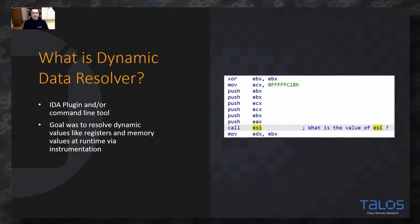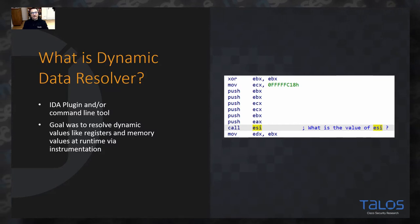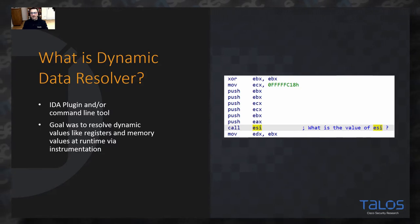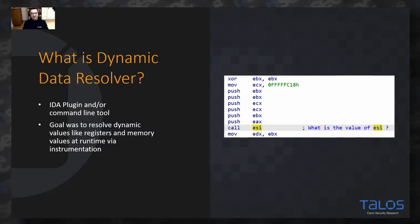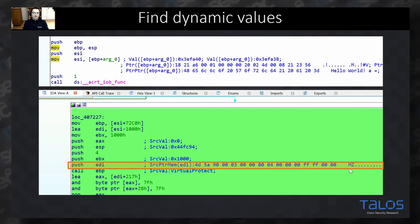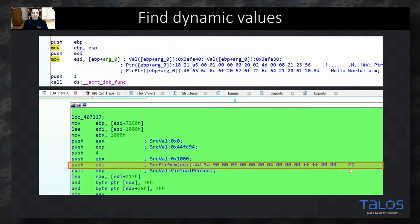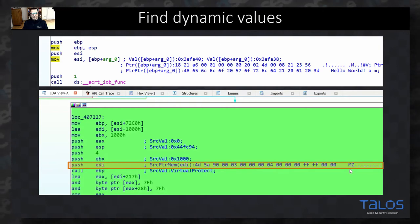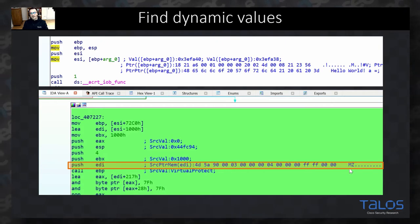Dynamic Data Resolver is mainly an IDA plugin whose goal is to resolve dynamic values like registers or memory values at runtime by using instrumentation. So if you're interested in something like call ESI and you want to know the value of ESI, you can use DDR to resolve it. You can not only resolve absolute values stored in a certain operand or register, you can also resolve pointers and pointer-pointers and get the memory they are pointing to.